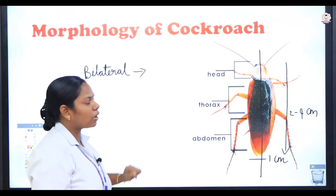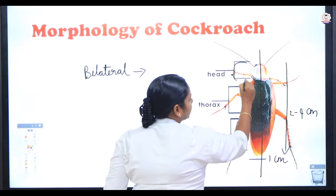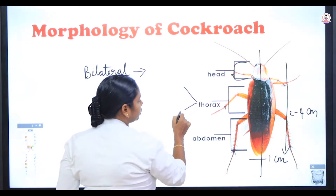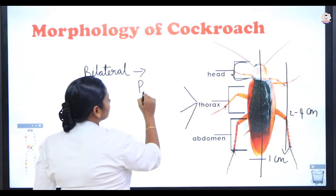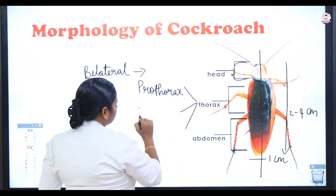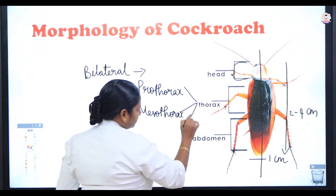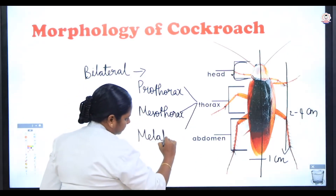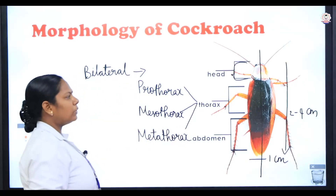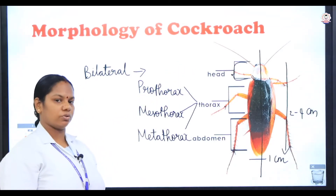The body of the cockroach is divisible into head, thorax, and abdomen. The thorax is further divisible into three parts: prothorax, mesothorax, and metathorax. In this session we are going to discuss only about the head of the cockroach.